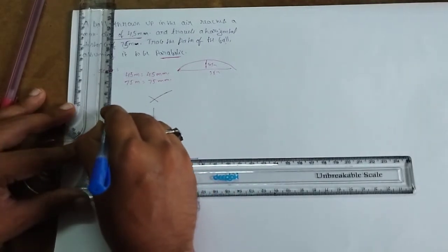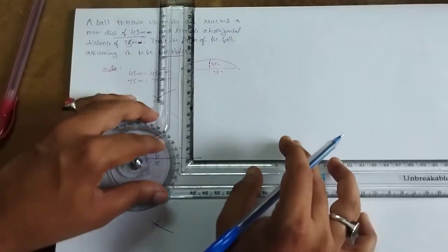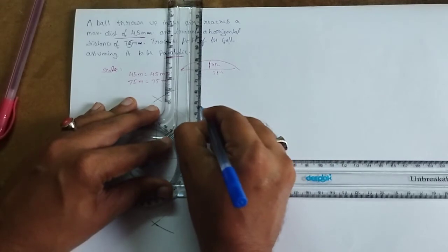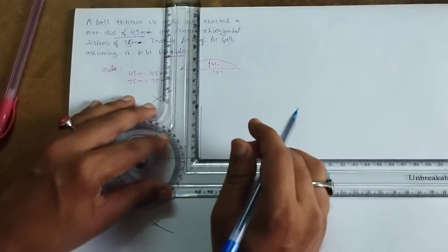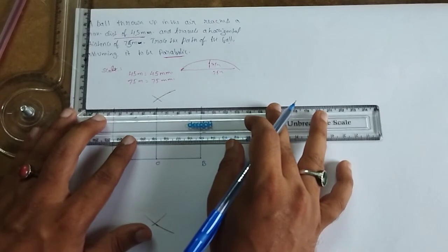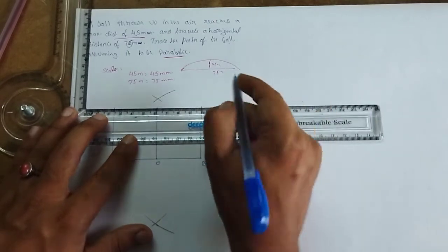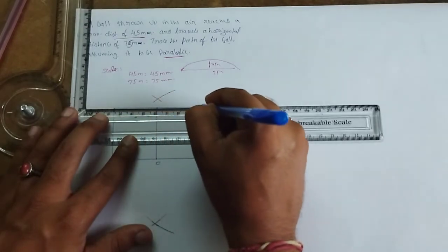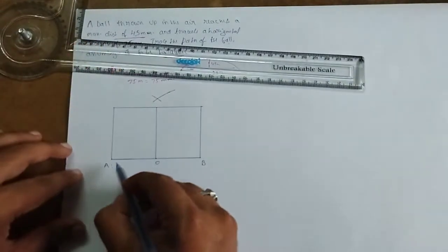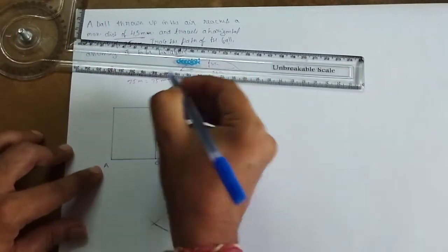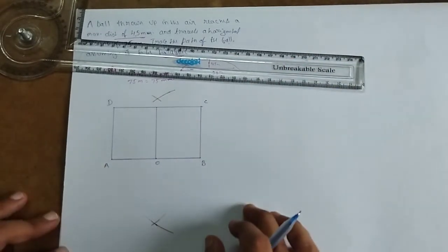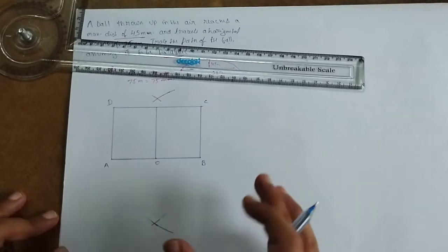Draw lines on the left side and right side, completing the rectangle. Name the corners A, B, C, D.